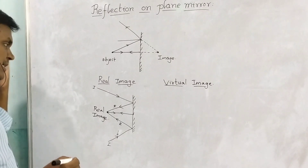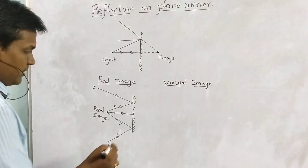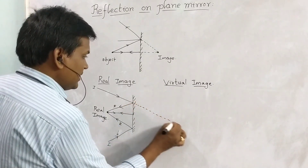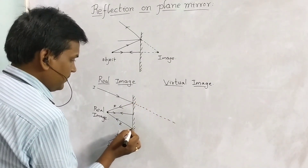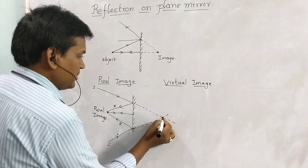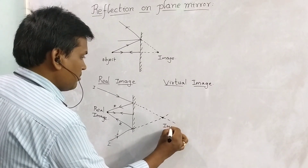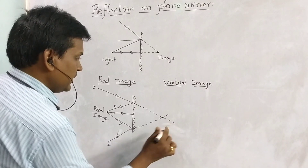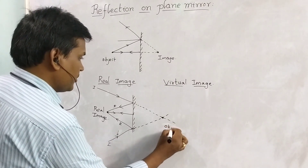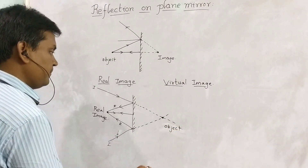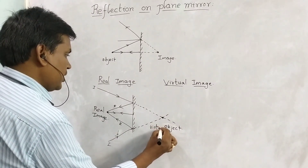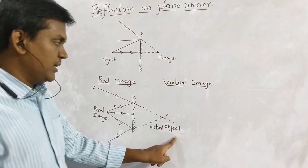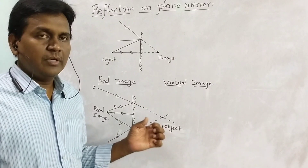If we extend the incident rays, these incident rays are not actually meeting. But if we extend them, these two extended incident rays are meeting at a point, so an image is formed. And what type of object is this? It is a virtual object.